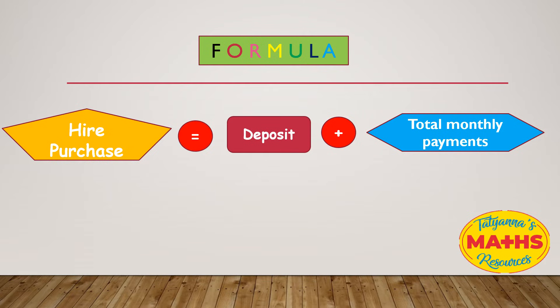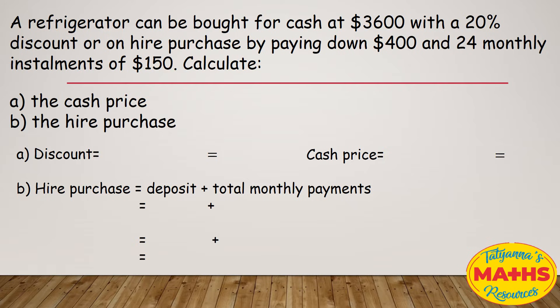Let's look at this: a refrigerator can be bought for cash at $3,600 with a 20% discount, or on hire purchase by paying down $400 and 24 monthly installments of $150. Calculate A, the cash price, and B, the hire purchase price.